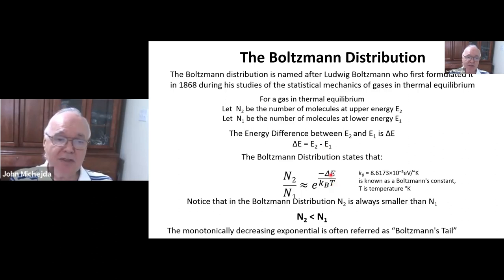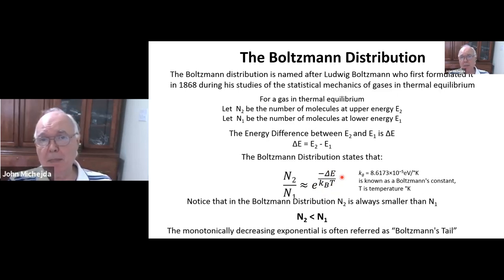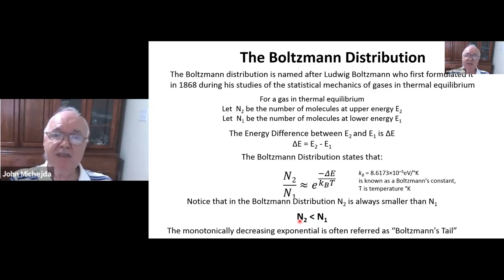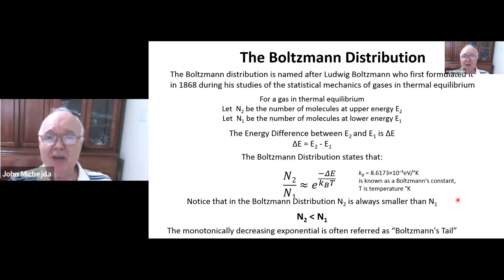If we have a number of gas molecules at higher energy E2 (call that number N2) and another number at lower energy E1, the Boltzmann distribution states that the ratio of excited states to lower-state molecules is given by an exponential. The delta E is the difference in energies, Kb is the Boltzmann constant, and T is temperature. Since delta E is positive, Kb is positive, and temperature is positive, we have an exponential of a negative number — always less than one. So the number of molecules in the excited state is always smaller than in the lower state. This monotonically decreasing exponential is affectionately called the Boltzmann tail.